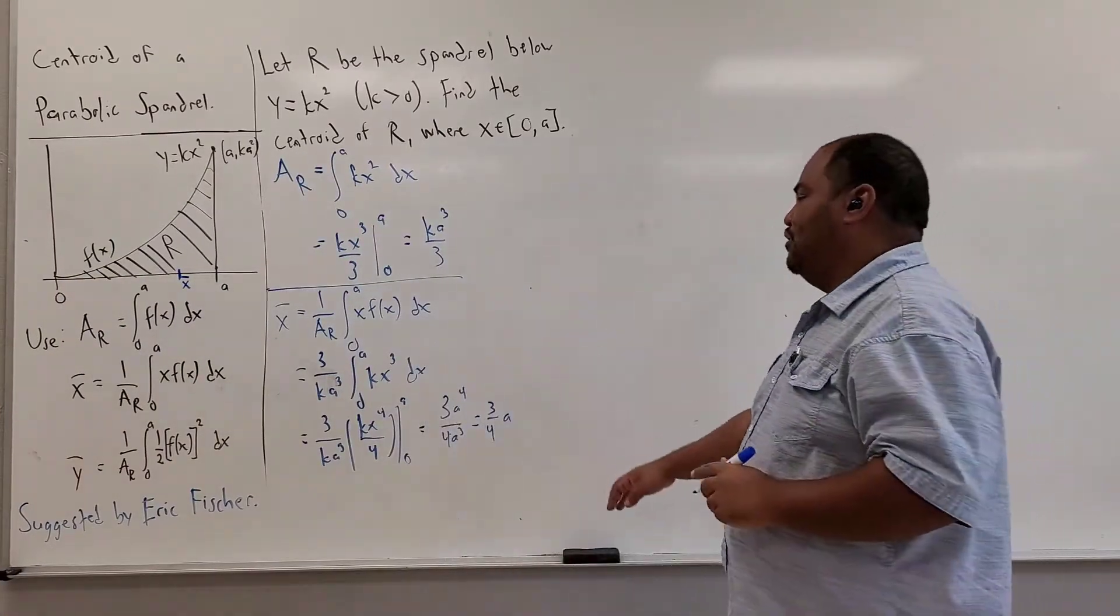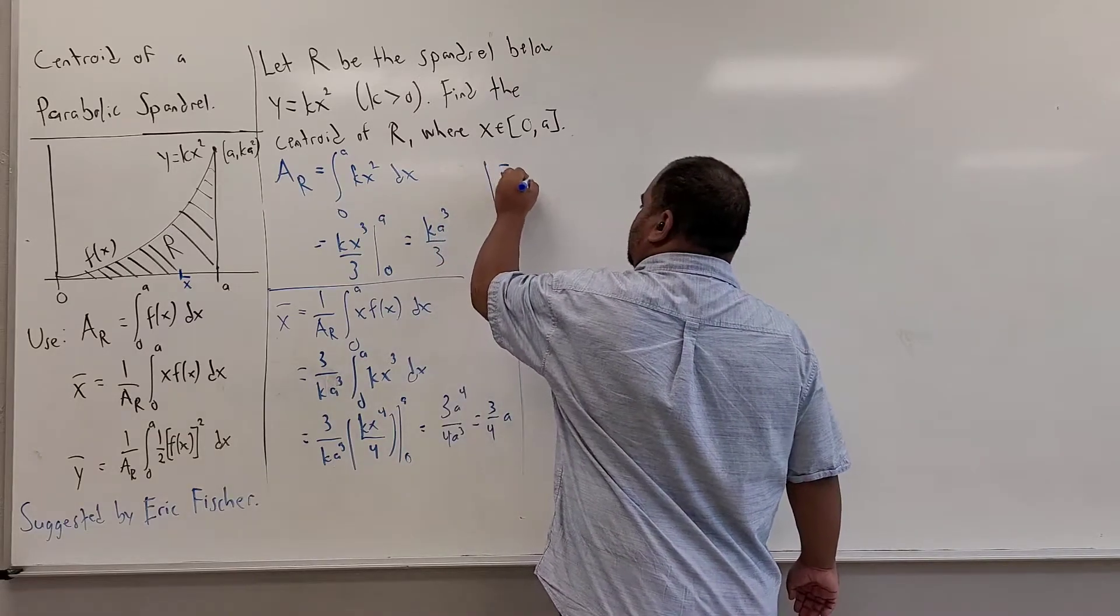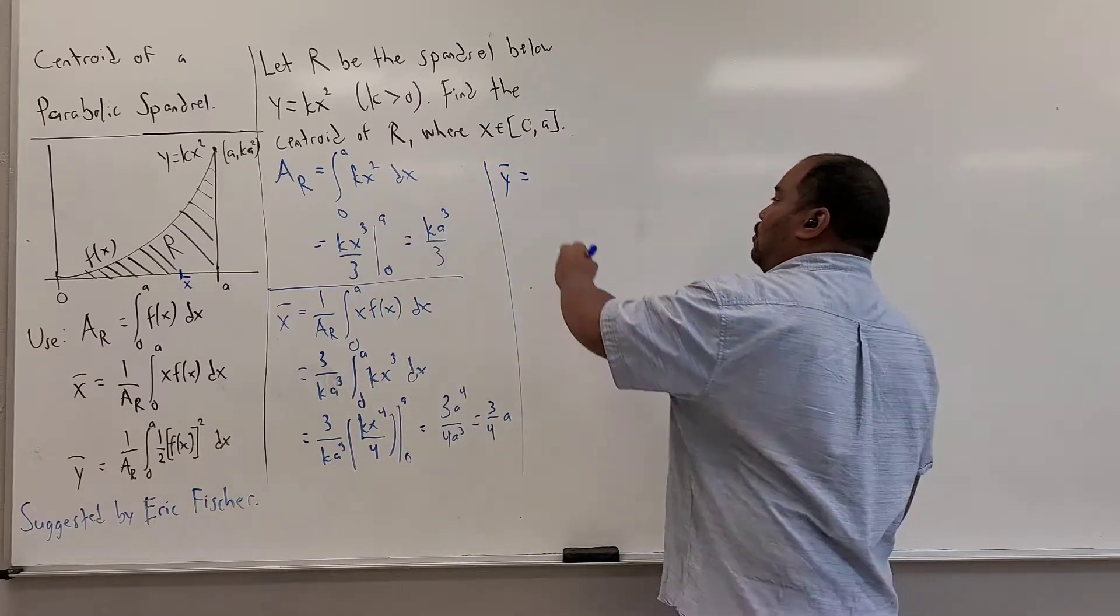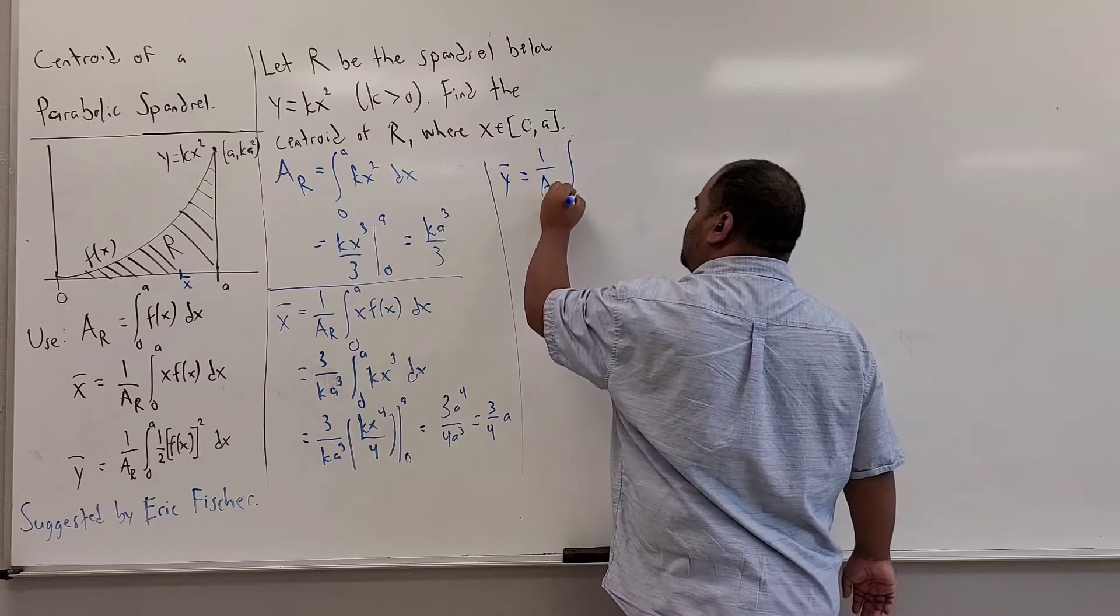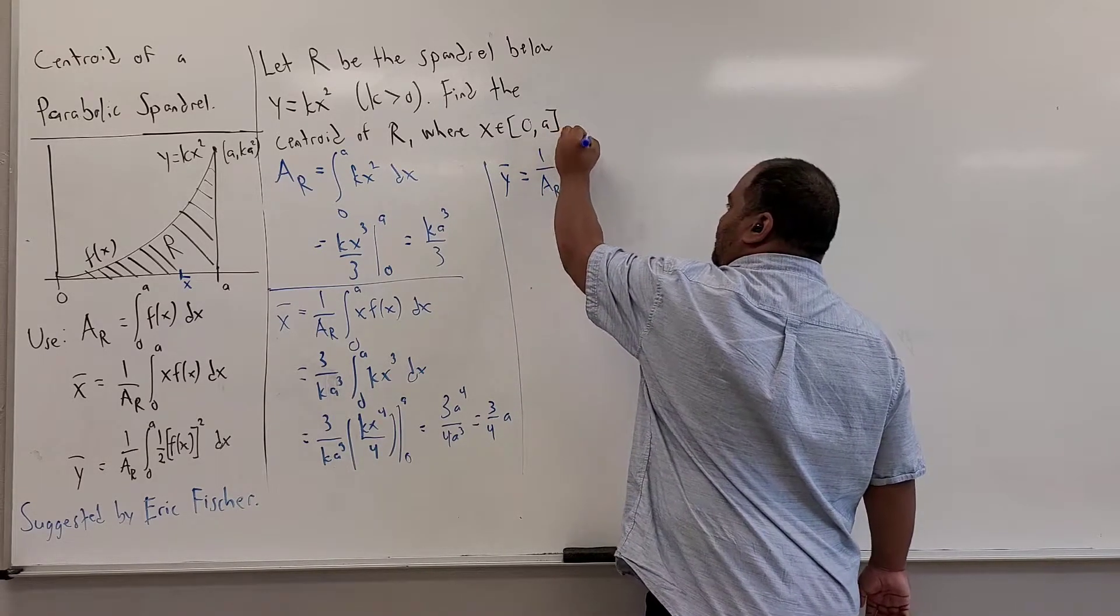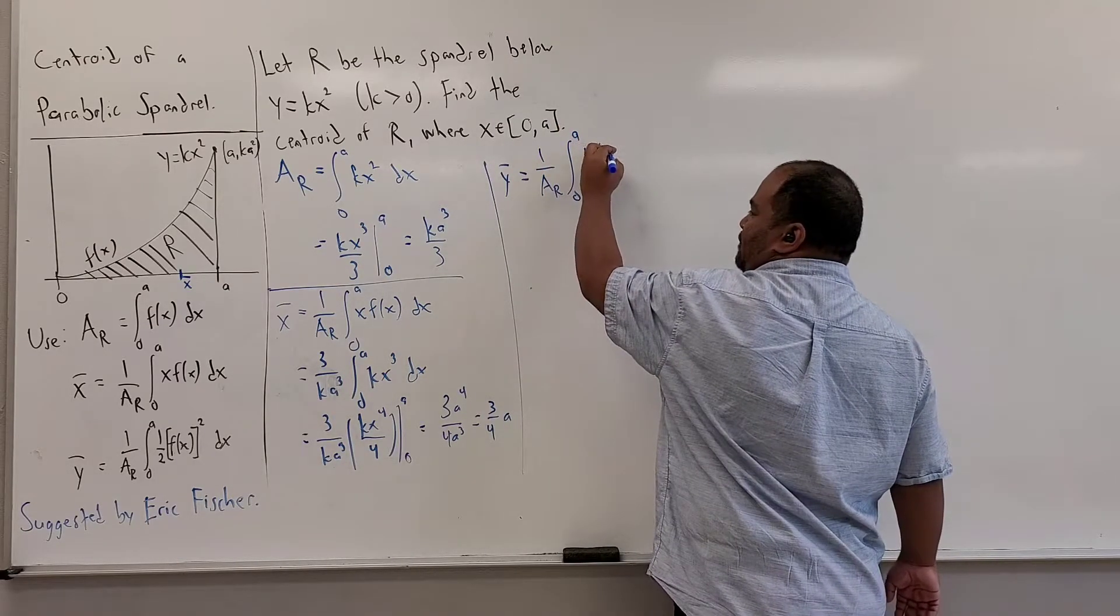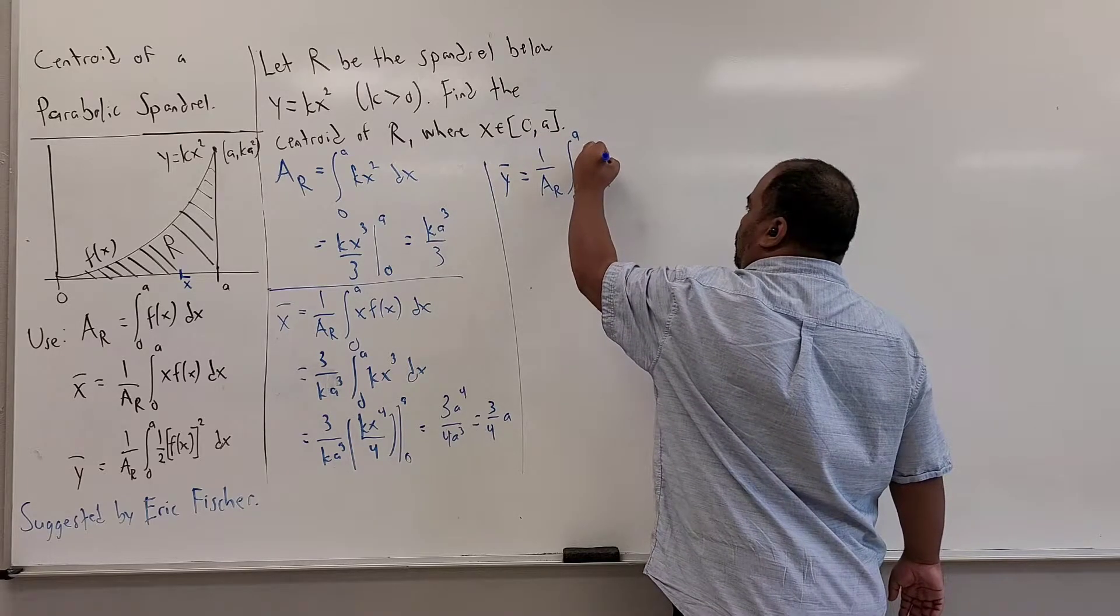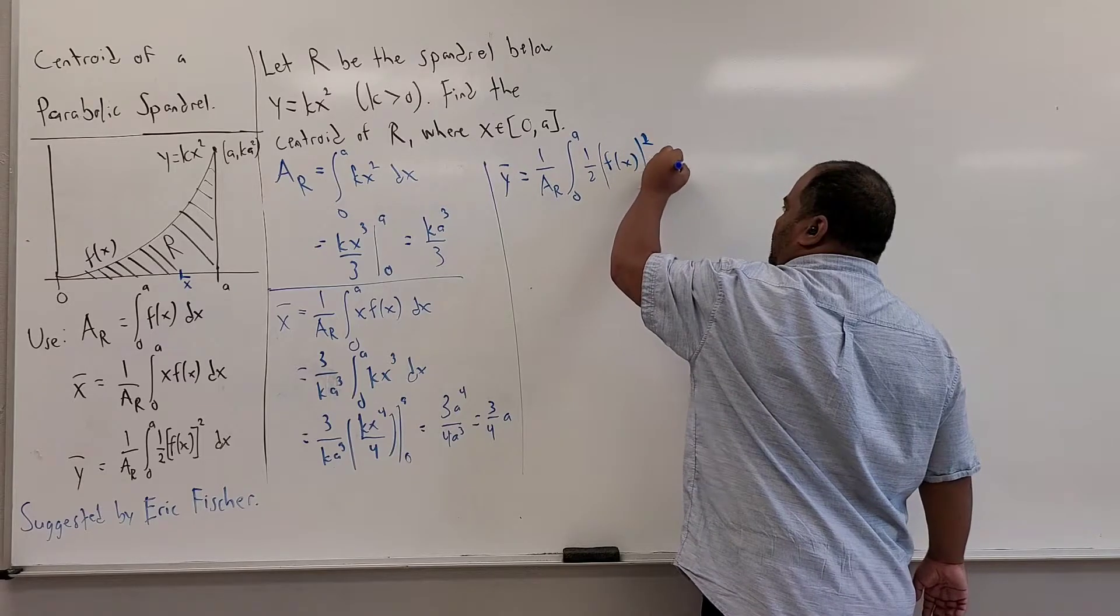And now we can find our y-coordinate. So just copying from the formulas there, we'll have 1 over the area of the region times the integral from 0 to a of, now this time it is 1 half the square of f, in this case it will be, well let's just write a little bit specifically here, 1 half f squared dx.